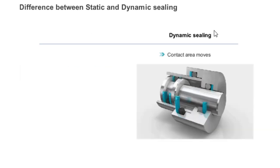O-rings in dynamic applications are recommended only for moderate service conditions. They are limited by the speed, the stroke, and the pressure against which they are sealing. With dynamic sealing, the contact area moves. In the example, the contact area moves in a linear direction.